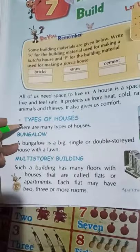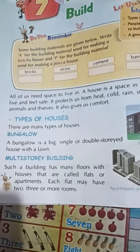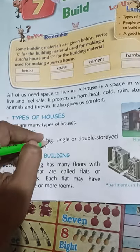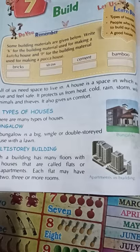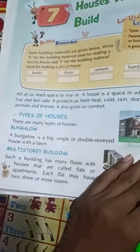Types of houses. So there are many types of houses. First one is the bungalow. Bungalow is a big single or double storied house with a lawn. So bungalow kisay kahenge? Single or double storied — matlab ek ya doh malay ka bada sa ghar hota hai. Usko bungalow kahenge.